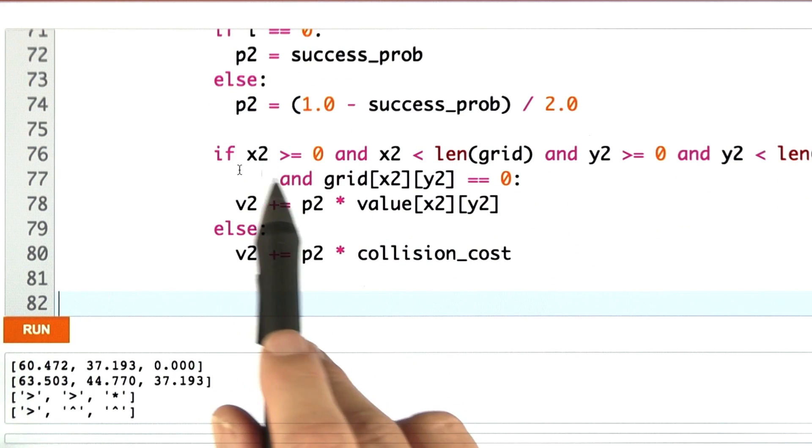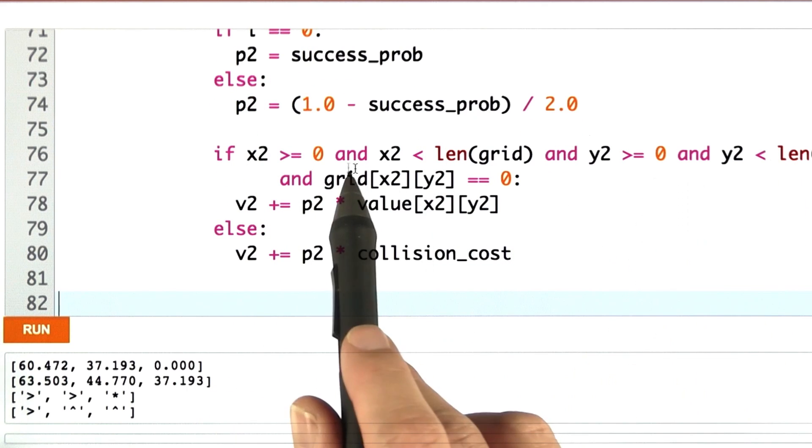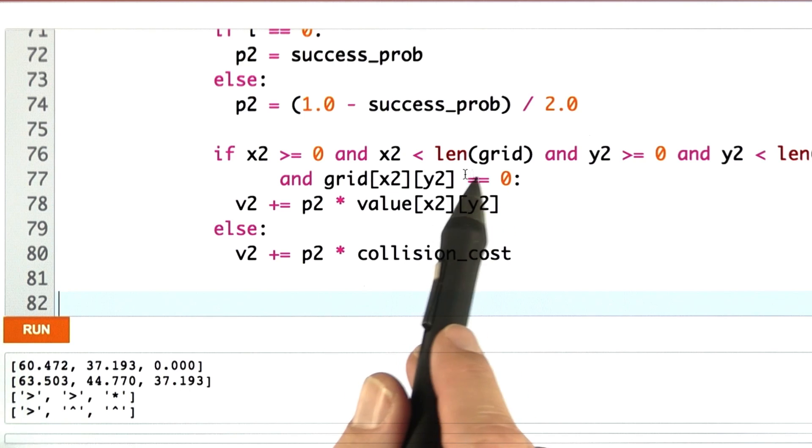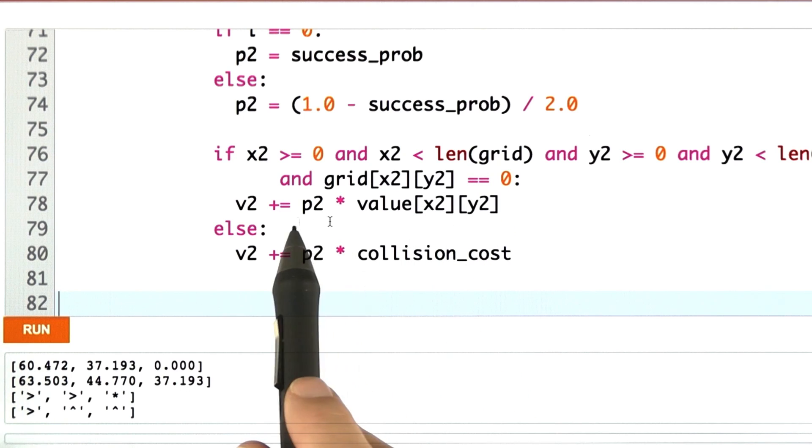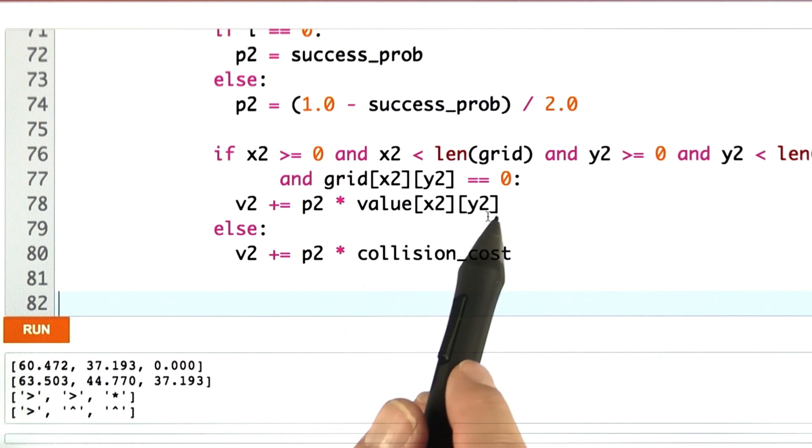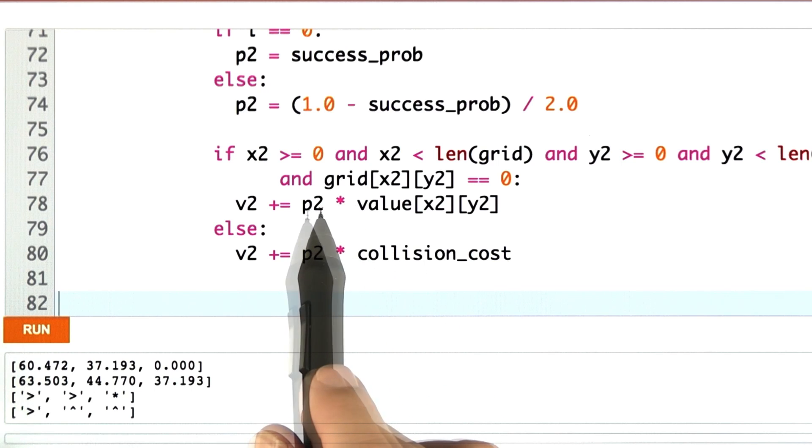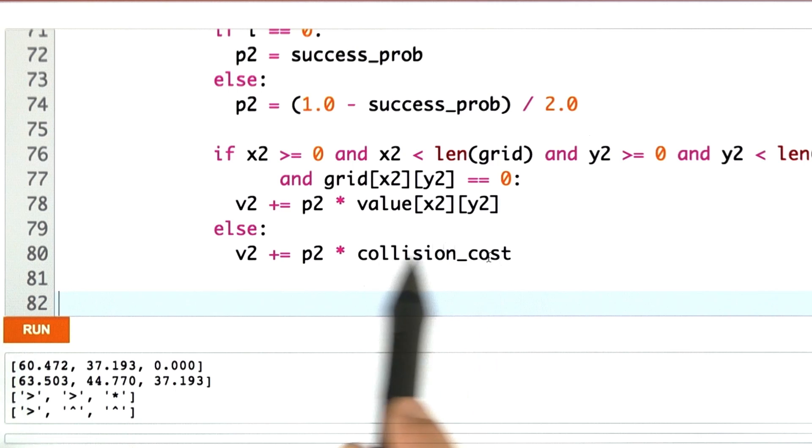And then the test proceeds by checking whether this is a legal grid cell. It's inside the grid and the grid value is 0. Then, like before, I add the value of that grid cell, but now multiplied by the probability of that specific action outcome. Otherwise, I do the same for the collision cost.